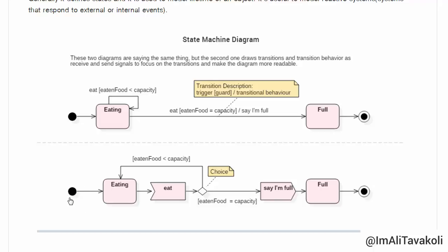we will get to our first state which is eating. And then, we will go to the eat. And here, we have to make a choice. If the eaten food is less than the capacity, then we should return to the eating state again. But, if the eaten food equals to capacity, then we will go here and say I'm full and transit to the full state and then our process ends.